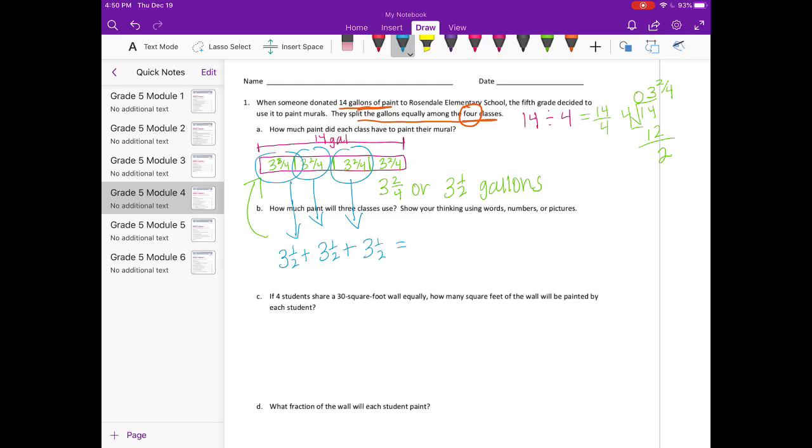So we have three and a half plus three and a half plus three and a half, and that would be equal to three plus three plus three is nine, and one half plus one half plus one half is three halves. And three halves is equal to one and one half. So nine plus one and one half would be ten and a half gallons.